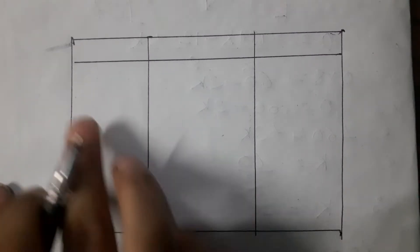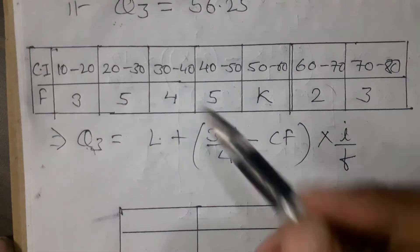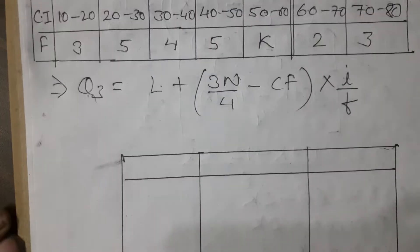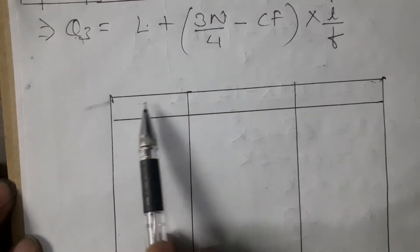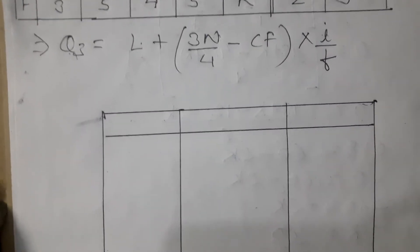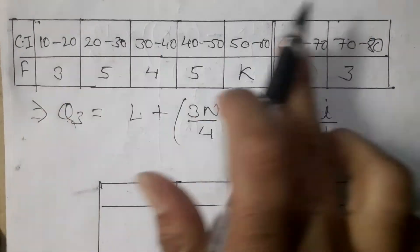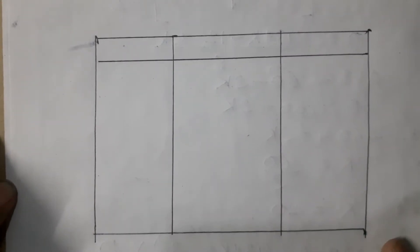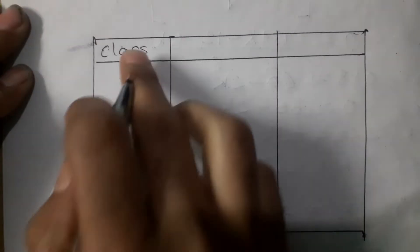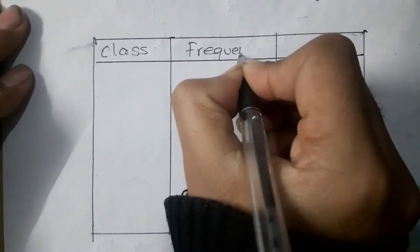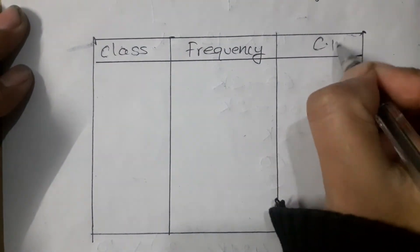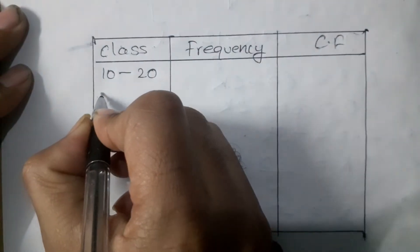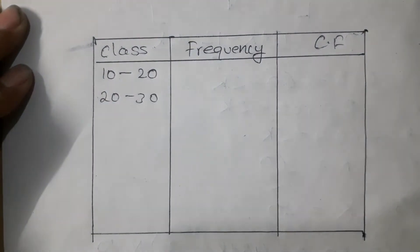Let's count the data. There are 7 rows including the header row. We have data from 10 to 20 up to 70 to 80, continuously with a class interval of 10. We can fill up the table with columns for class, frequency, and cumulative frequency (CF). The classes go: 10 to 20, 20 to 30, and so on.